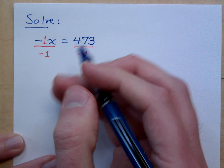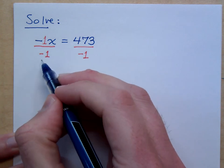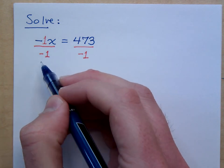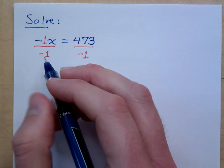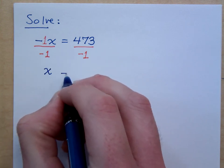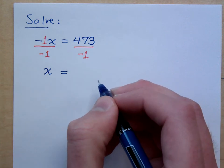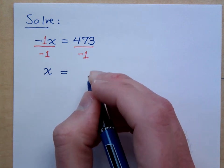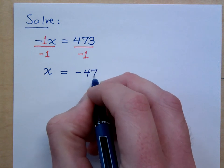So what is negative 1 divided by negative 1? It's a positive 1, right? So I do get exactly what I want, which is a positive 1 for the coefficient of the variable. And then what's 473 divided by negative 1? It's negative 473.